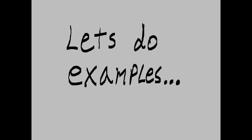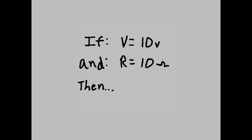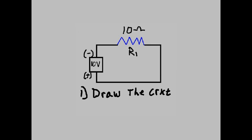Let's do examples. If V equals 10 volts and R equals 10 ohms, then I equals what? First, we draw the circuit. Here you see the 10 volts, the battery. And here you see the resistor, R1. It's 10 ohms.